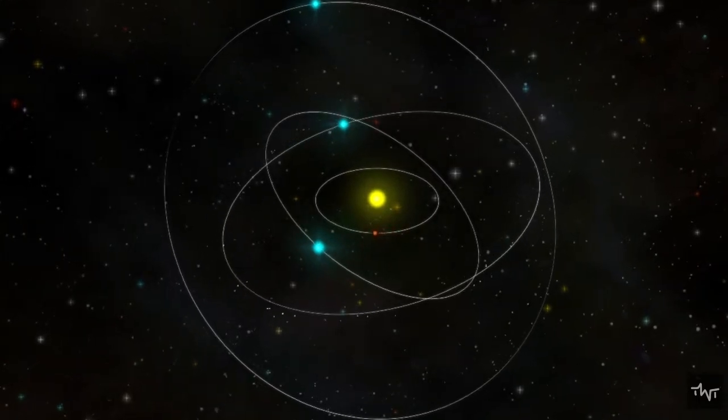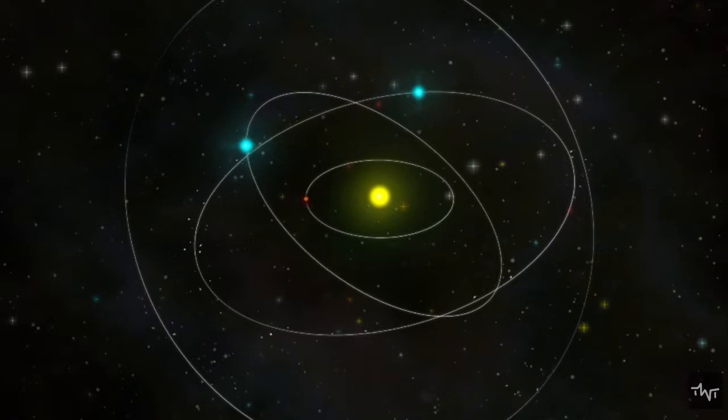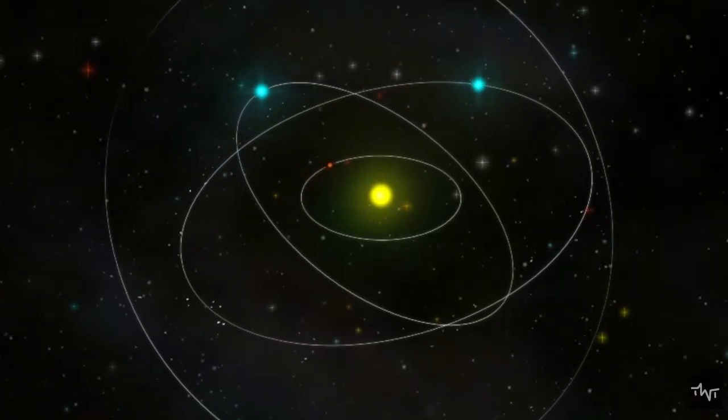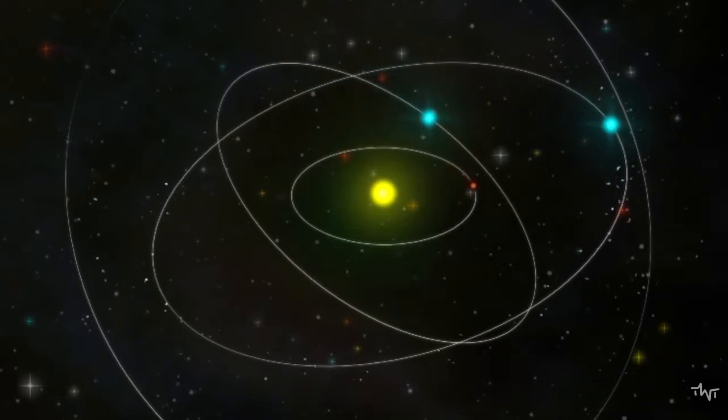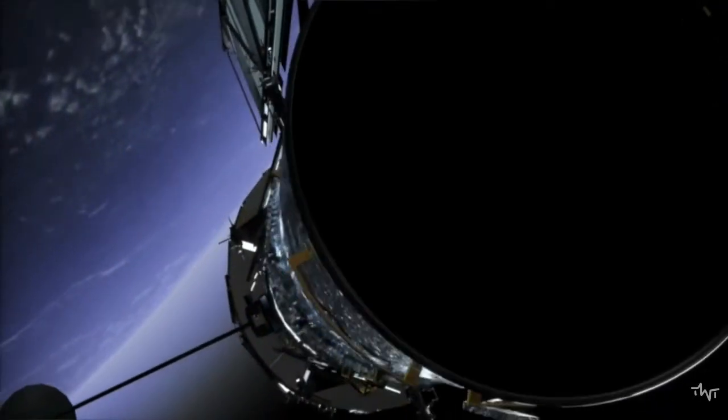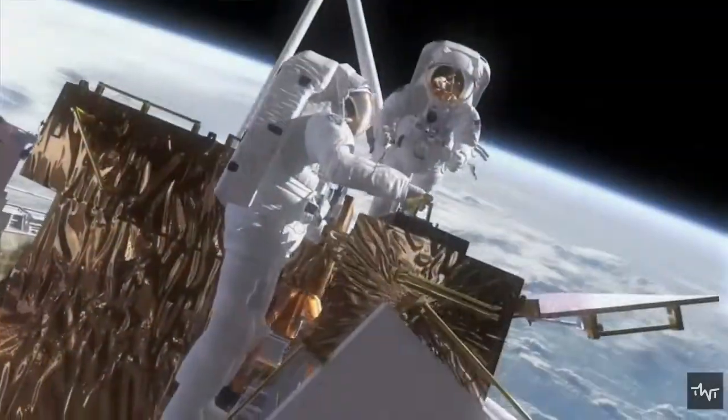This method has been used in one form or another to determine the distances to all of the planets in our solar system, except Pluto, which we have not visited. It is also routinely used to measure the distance from the Earth to the Moon. Mirrors left by Apollo astronauts reflect a laser beam shot from Earth, and allows scientists to keep close track on the lunar orbit.